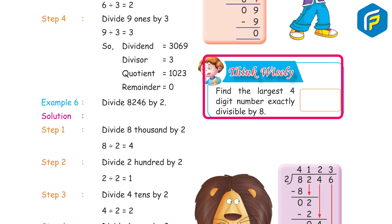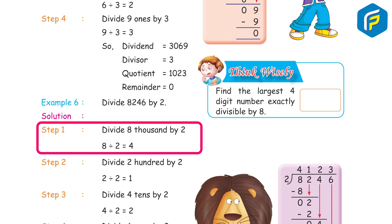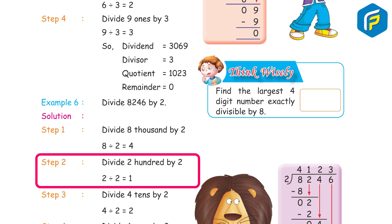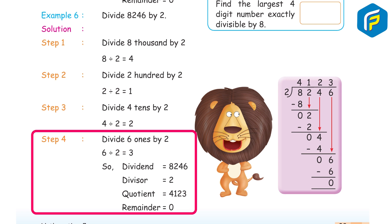Think wisely: find the largest 4-digit number exactly divisible by 8. Example 6: Divide 8246 by 2. Step 1: Divide 8 thousands by 2 — 8 ÷ 2 = 4. Step 2: Divide 2 hundreds by 2 — 2 ÷ 2 = 1. Step 3: Divide 4 tens by 2 — 4 ÷ 2 = 2. Step 4: Divide 6 ones by 2 — 6 ÷ 2 = 3. So, dividend 8246 ÷ divisor 2 = quotient 4123, remainder 0.